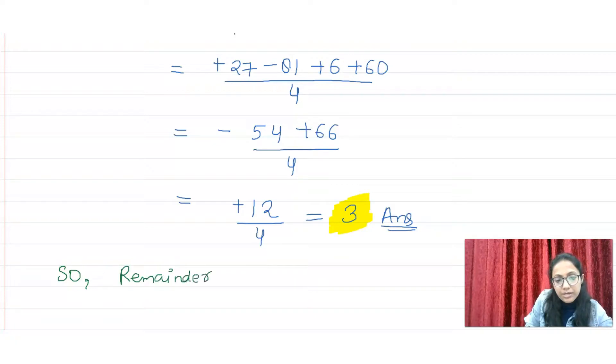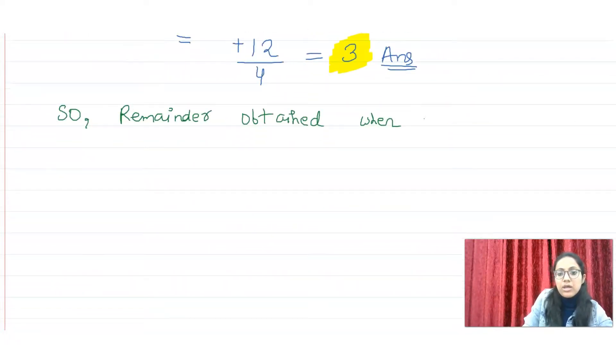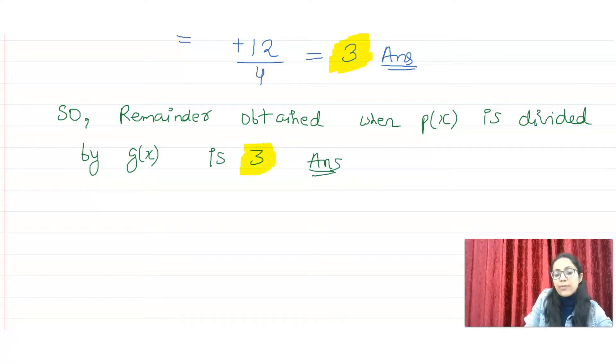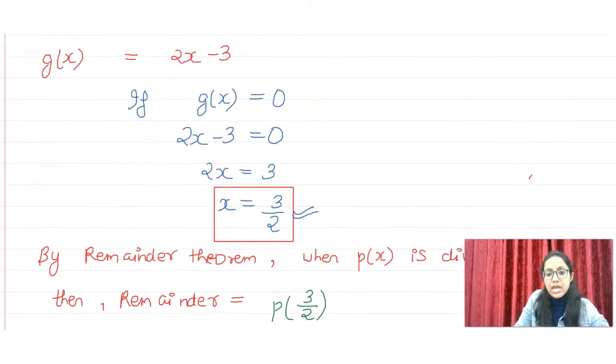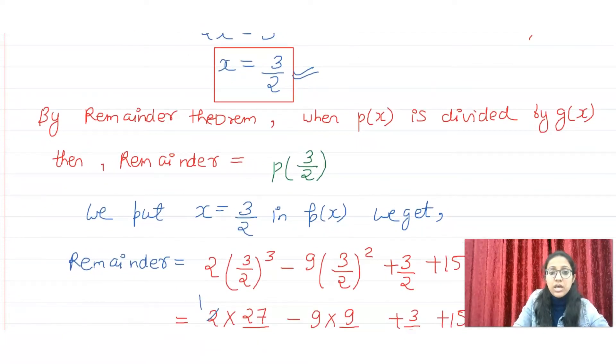So we can write easily, remainder obtained when p of x is divided by g of x is 3. And this will be our complete answer. So in this way, apply remainder theorem. The simplest method, because when we apply division method, long division, but remainder theorem is much simpler.